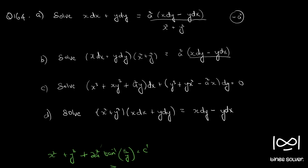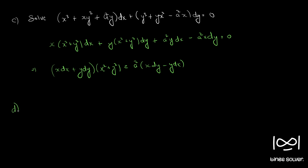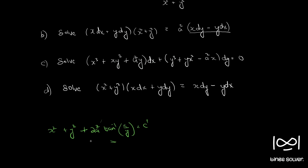Question D is a special case of question B where A squared equals 1. So applying A equals 1 to the solution, we get the solution to question D: x squared plus y squared plus 2 tan inverse y by x equal to c dash. So all questions in question 164 are solved.